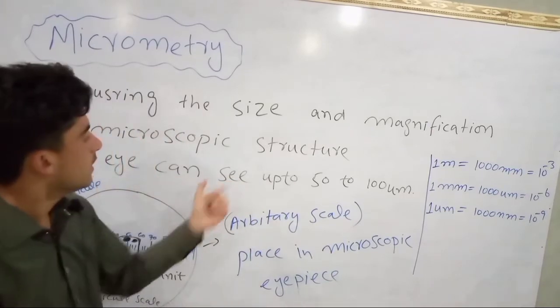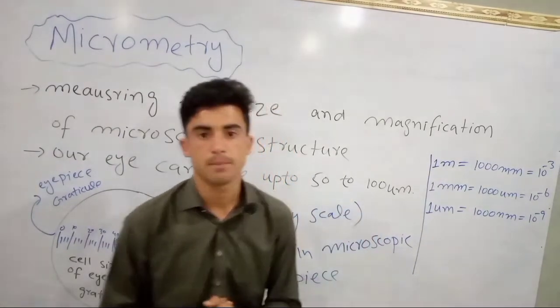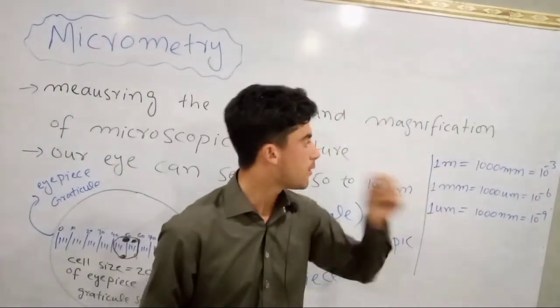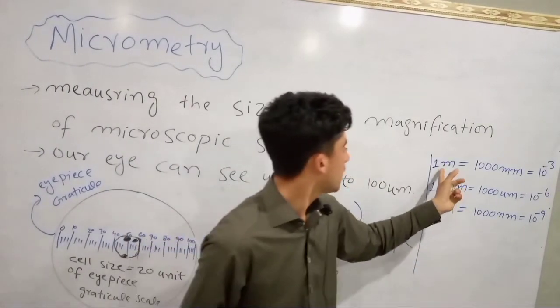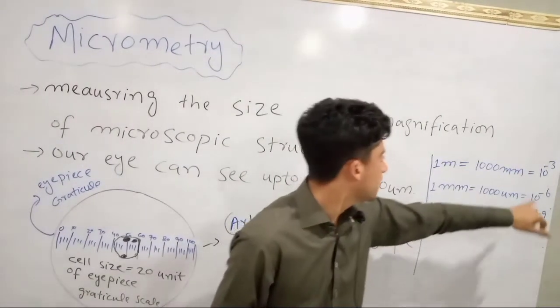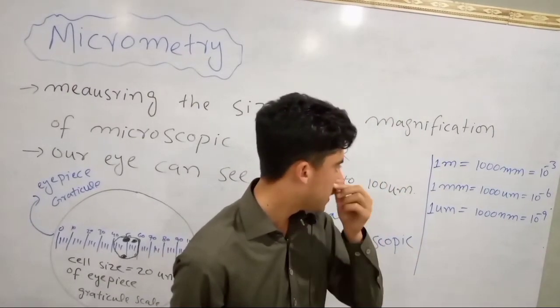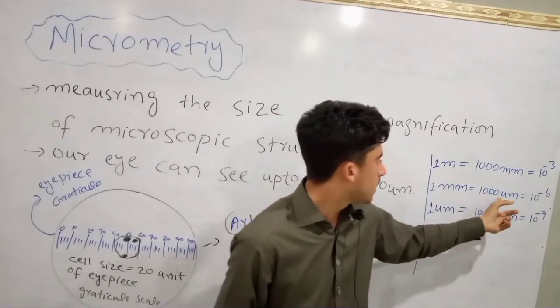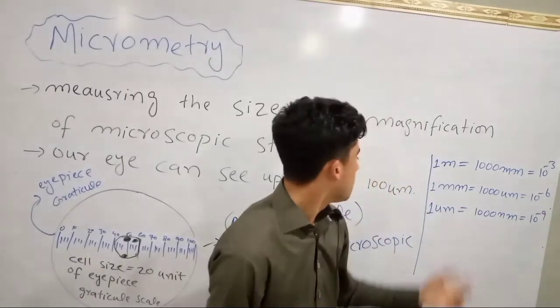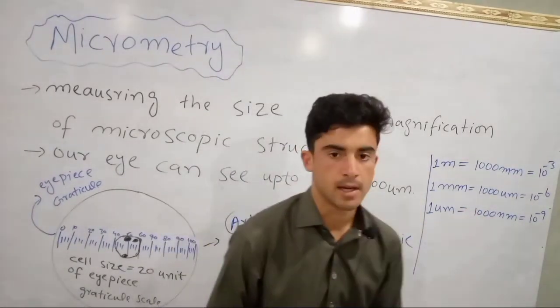Micrometry measures objects that are 50 to 100 micrometers. One meter is 1,000 millimeters, then one millimeter is 10^-3 meters. One millimeter is 1,000 micrometers, which is 10^-6 meters. One nanometer is 10^-9 meters.